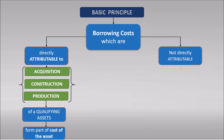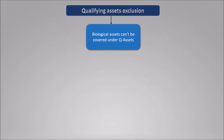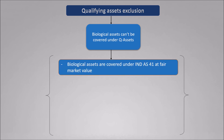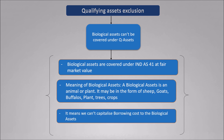If the borrowing cost is not directly attributable, it should be recognized as an expense. Now let's study qualifying asset exclusions. Biological assets cannot be covered under qualifying assets because biological assets are covered under IND AS 41 at fair market value. A biological asset is an animal or plant — it may be in the form of sheep, goats, buffaloes, plants, trees, or crops. This means we cannot capitalize borrowing costs to biological assets.